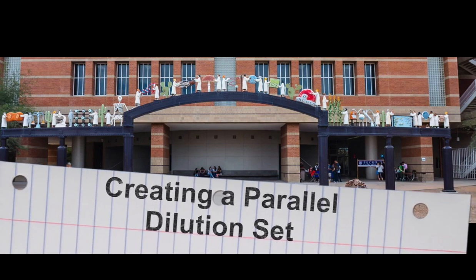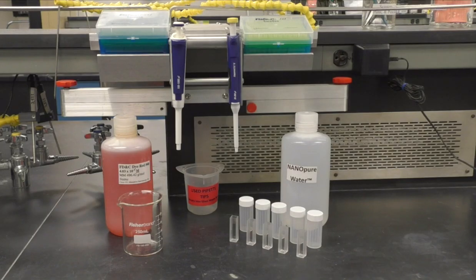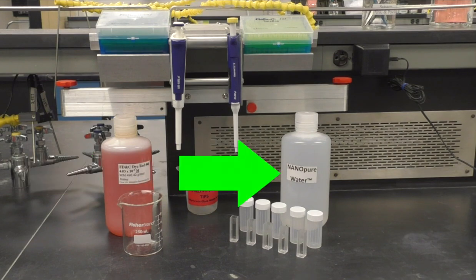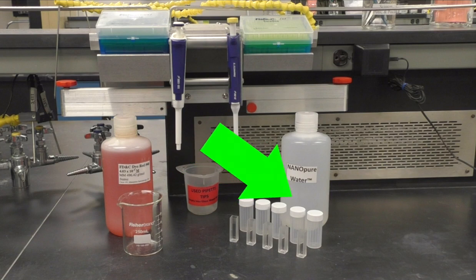This video will demonstrate how to create a parallel dilution set. To begin, you will need a stock solution of the chemical with a known concentration, a solvent, and a vial and cuvette for each solution you plan to create in the set.